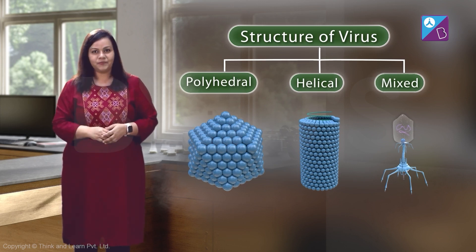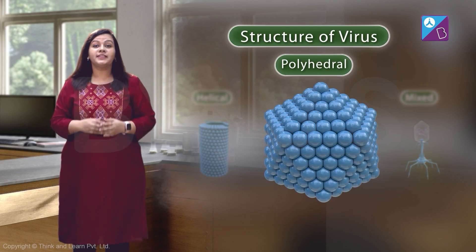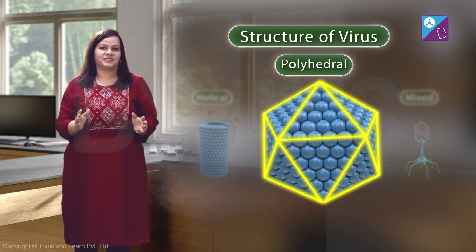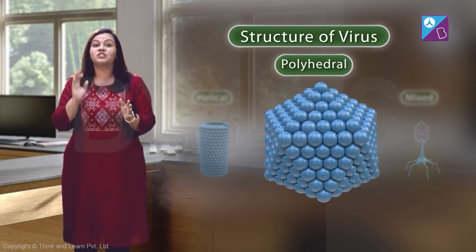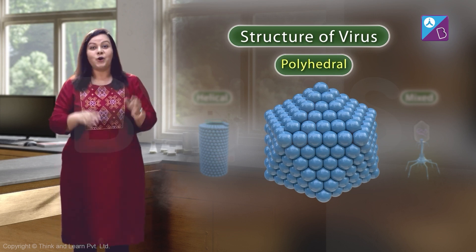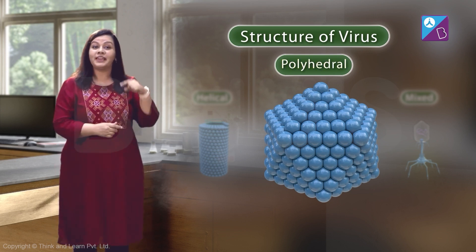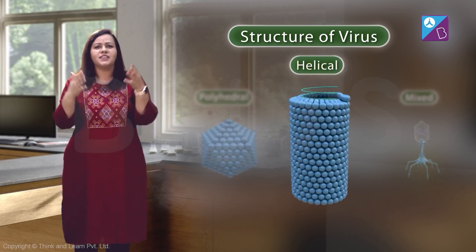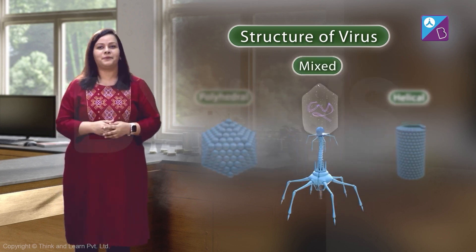Let's check them out. In this one, you can see that it has many flat faces. This type of shape is called a polyhedral shape. Viruses can also be helical in shape, and sometimes they can even have other complex shapes.